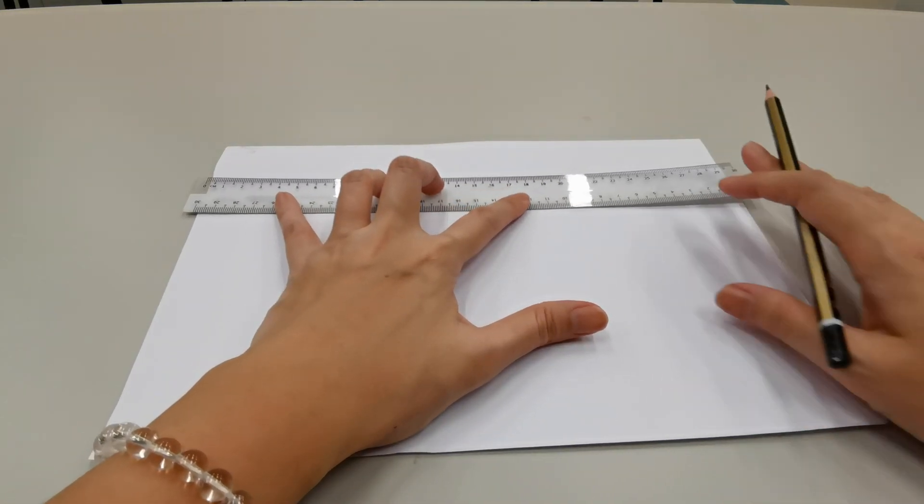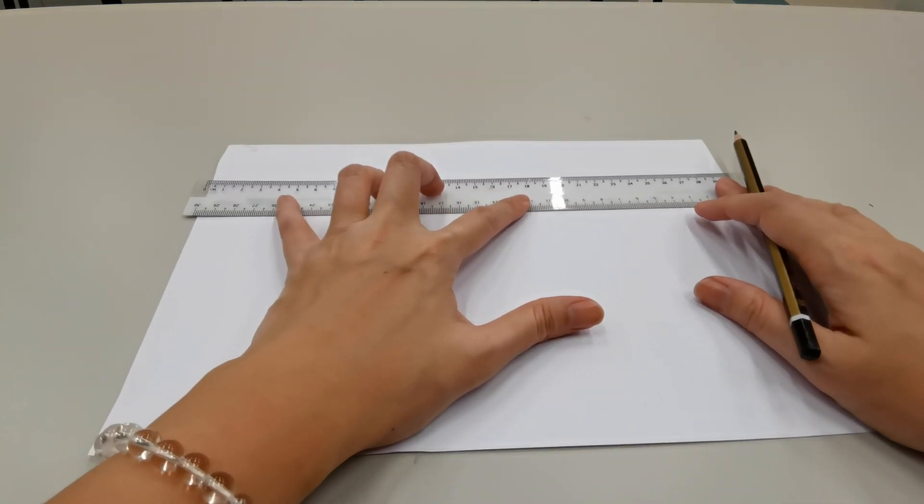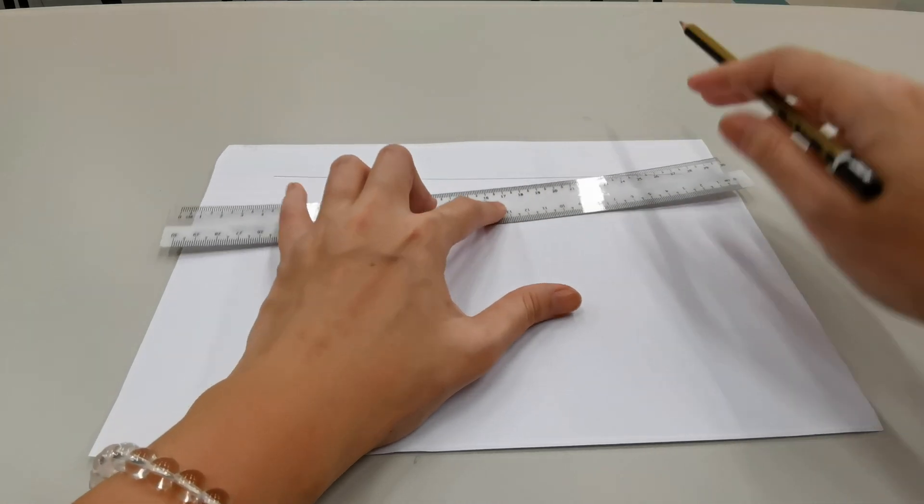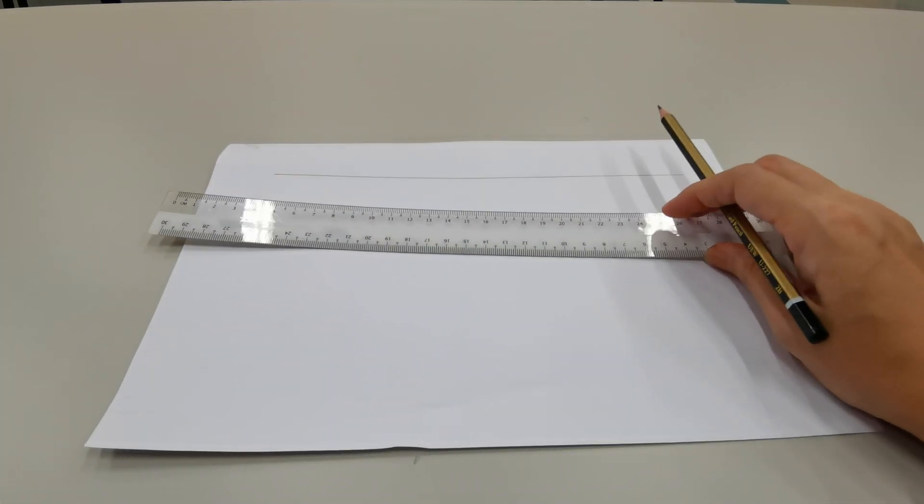So first of all, with the blank piece of paper, we're going to draw a straight line using the ruler and a pencil, and this would be where we would place the plain mirror.